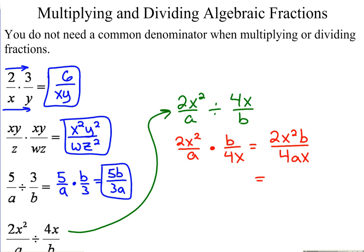2 over 4 can be simplified. We're left with x squared b over 2ax. Actually, let's redo that again. We can simplify it even more. 2 over 4 becomes 1 half. What happens with the x's? There's 1x that's going to cancel, leaving me with 1 still up top. So the top, I'm just going to have xb. In the bottom, the 4 has been simplified to 2. The x is canceled, and we're left with xb over 2a.